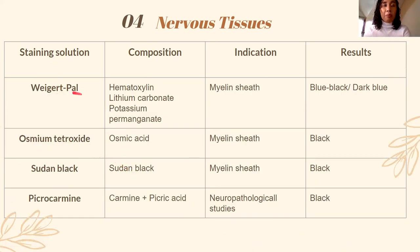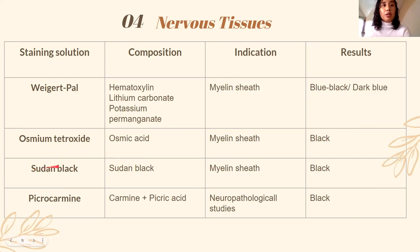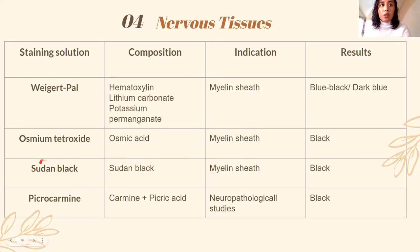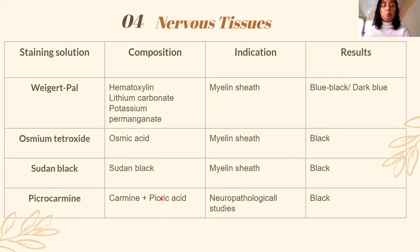For the myelin sheath, we use Weigert-PAL — containing Weigert's hematoxylin, lithium carbonate, and potassium permanganate — as well as osmium tetroxide, which is both a fixative and a stain. Sudan black is an oil-soluble stain that stains the sphingomyelin lipid portion of myelin. Weigert-PAL produces blue-black to dark blue. Pyrocarmine (containing picric acid and carmine from cochineal dye) is used for neuropathological studies and produces black.